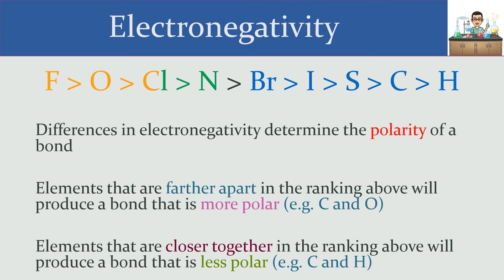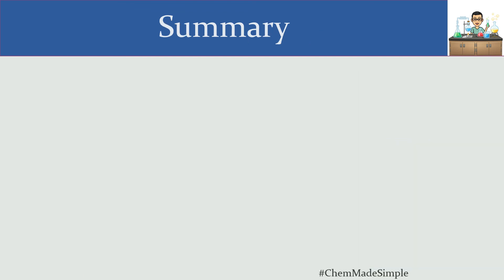Depending on the electronegativity scale used, you may find that chlorine is not more electronegative than nitrogen — certain scales have those two elements switched. But that doesn't matter much for the qualitative analysis we're doing. If they're close together in the ranking, the chlorine-nitrogen bond isn't all that polar. The numbers may vary a little, but this ranking gives a good general understanding of where these nine important elements lie relative to each other.